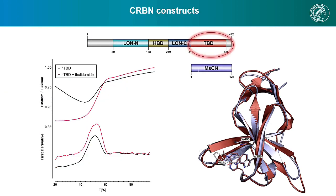We are mostly interested in the thalidomide binding domain. Before working with the isolated domain, we characterized our construct and its stability. As you can see from the nanoDSF measurements on the left, the domain itself shows a melting temperature of around 50 degrees Celsius. Furthermore, IMiD binding — in this case with thalidomide — further stabilized the protein, and so we concluded that we have a pretty good construct to work with.